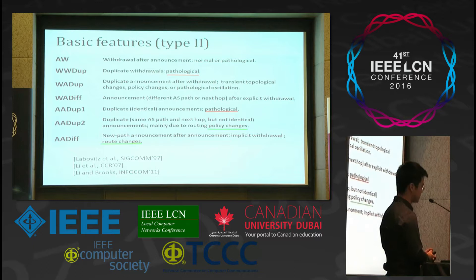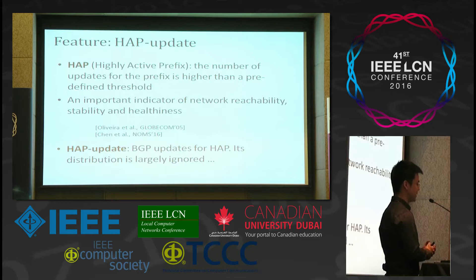These features with big differences are used in previous works to assess the healthiness of the BGP system. The last feature is the HAP update. HAP stands for highly active prefix: the number of updates for a prefix is higher than a predefined threshold. Then the prefix is a highly active prefix. It is an important indicator of network reachability, stability, and healthiness.